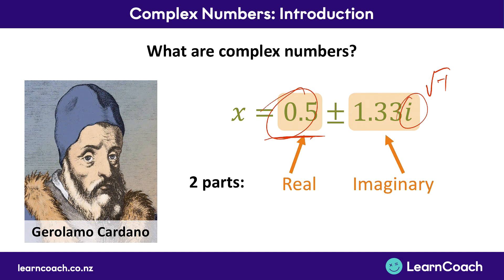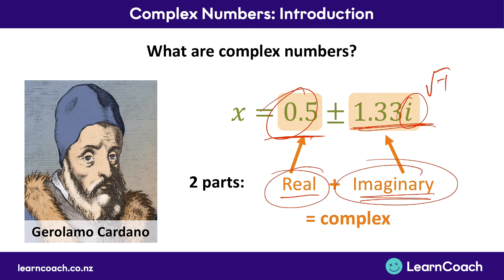Now if you only have this real part, it's just called a real number. If you only have this imaginary part with an i, it's called an imaginary number. However, when you add these together, you get a complex number. It has both the parts of real and imaginary in it. So this is what a complex number actually is—something made up of these two parts.